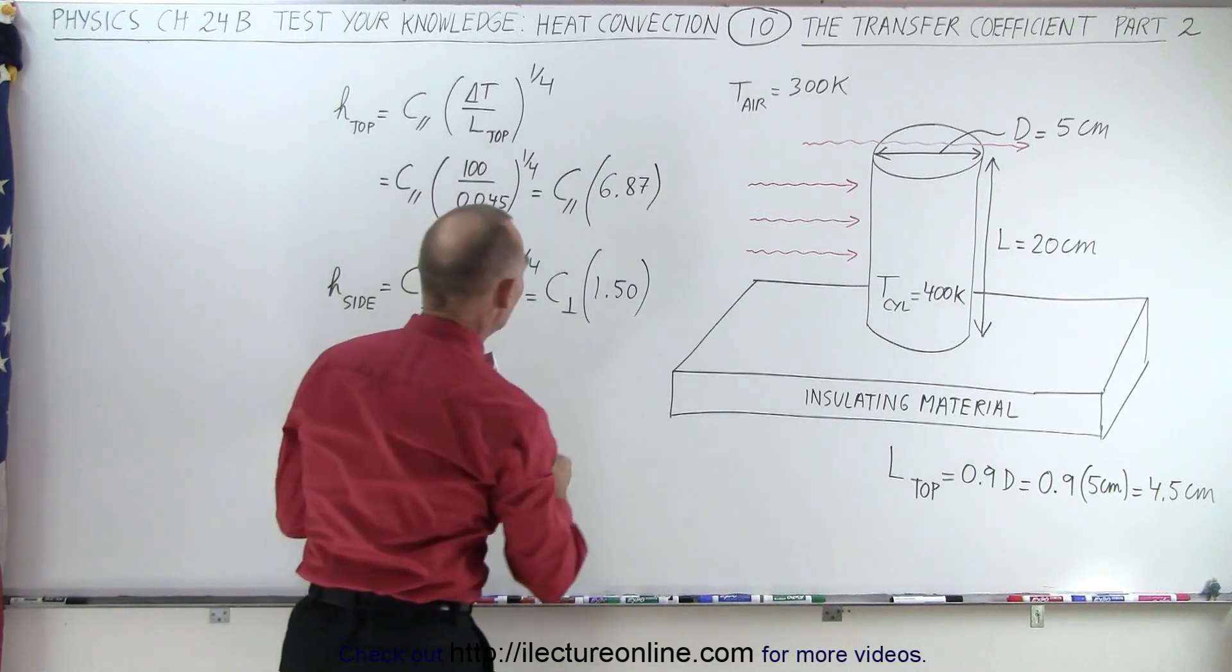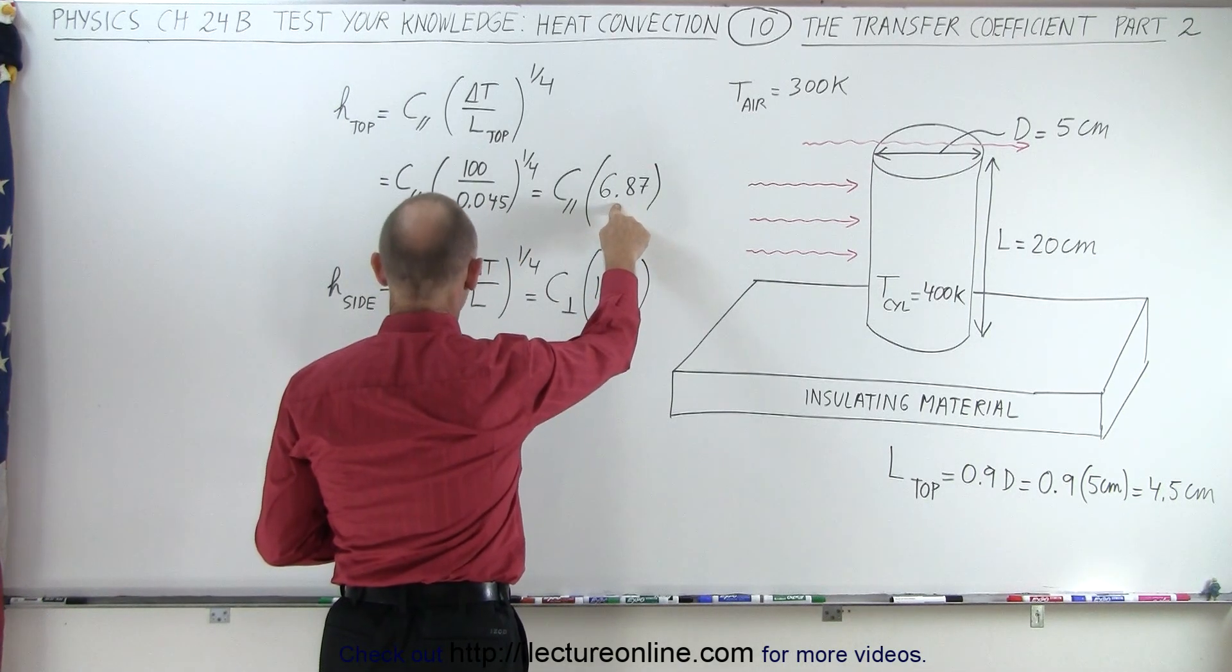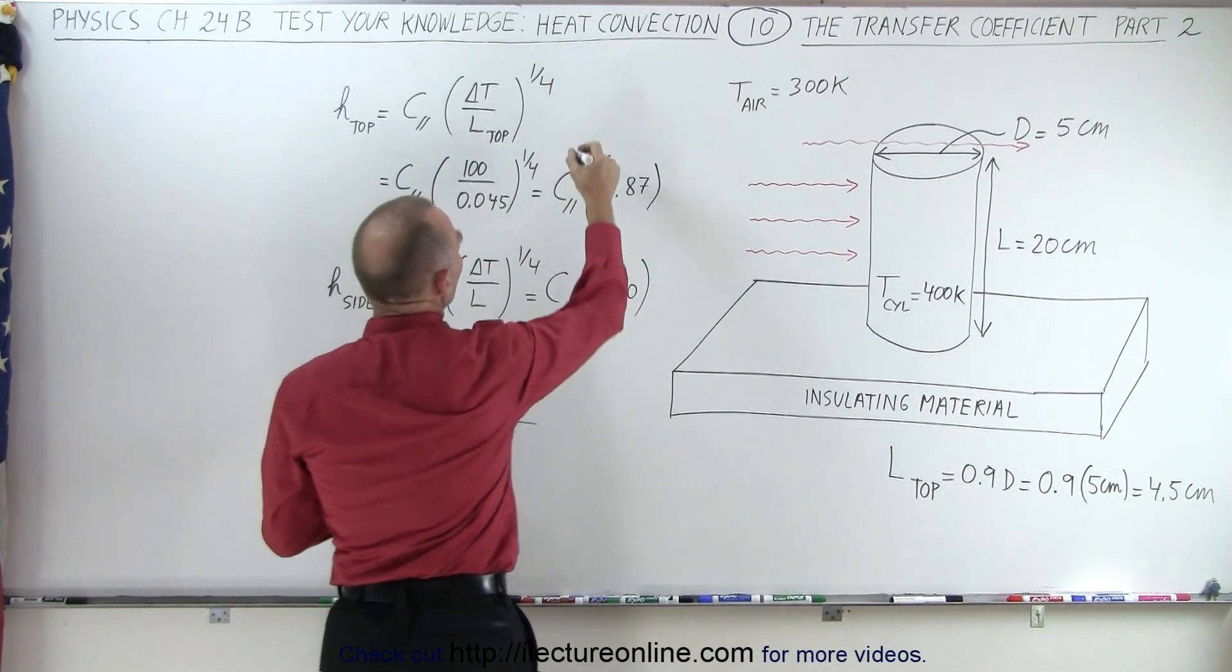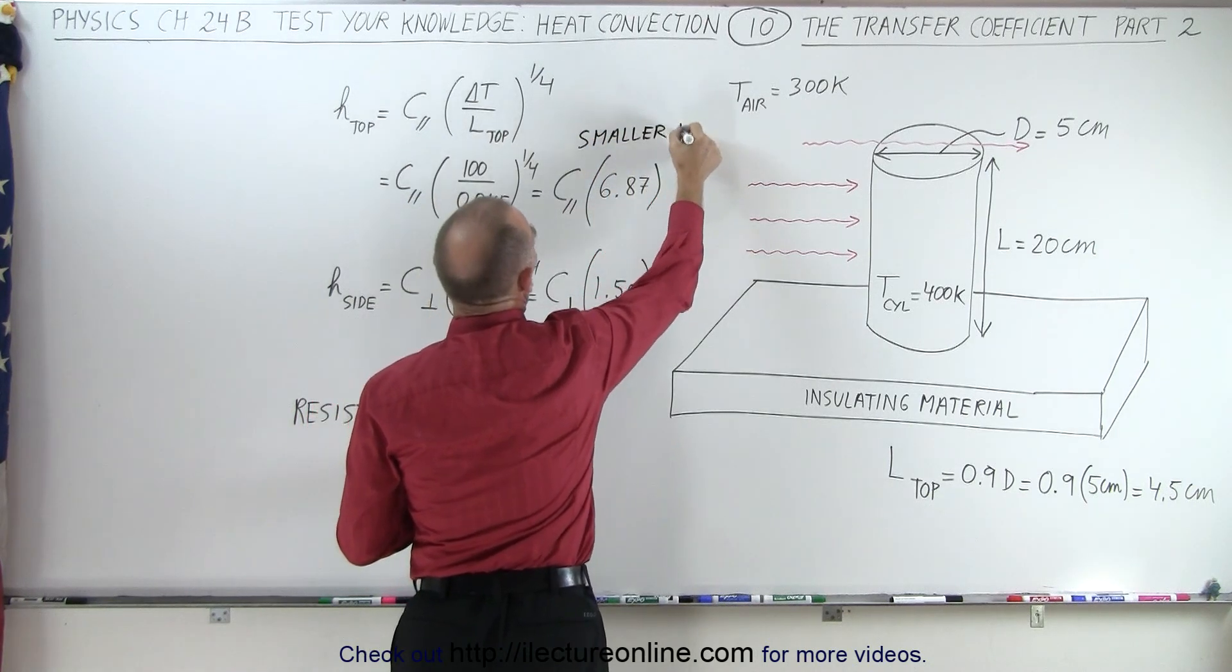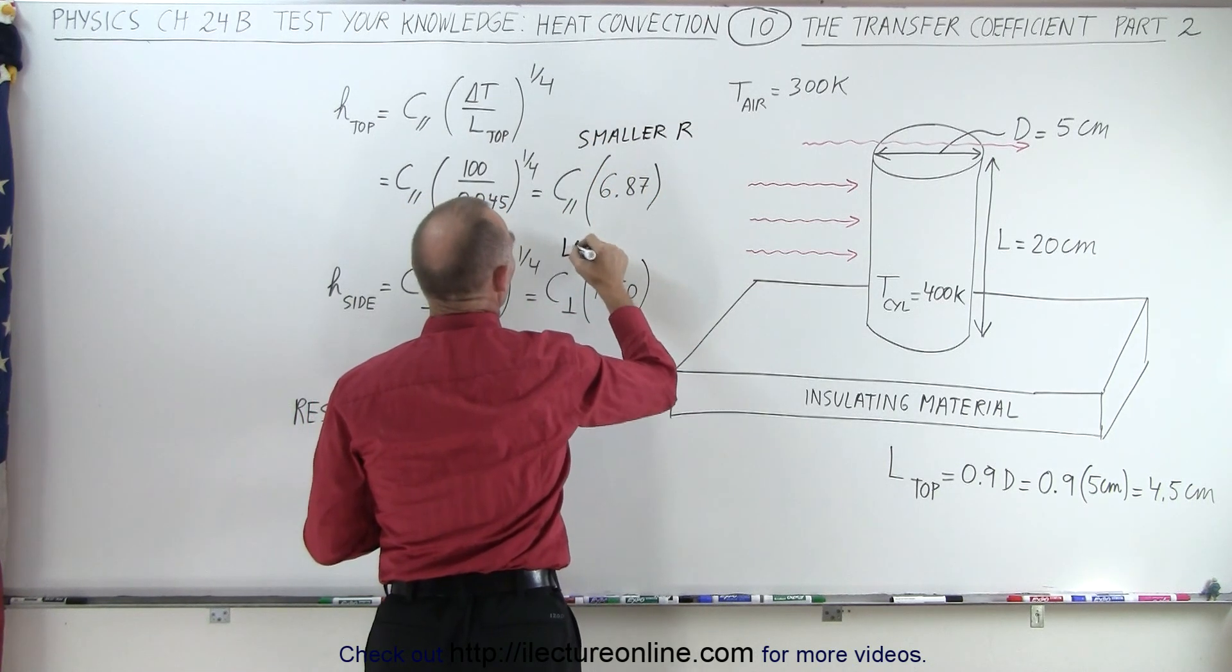So now let's try to make sense of that. So this means larger H, which means smaller resistance. So this is smaller R, this is larger R.